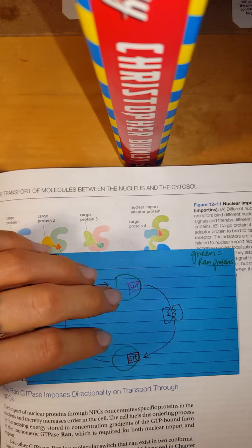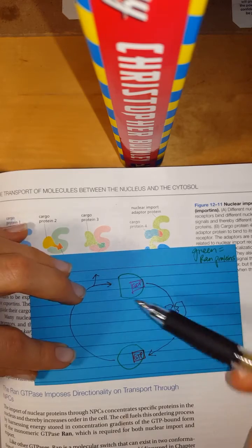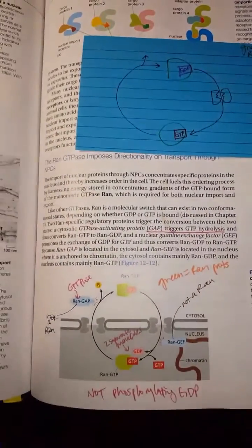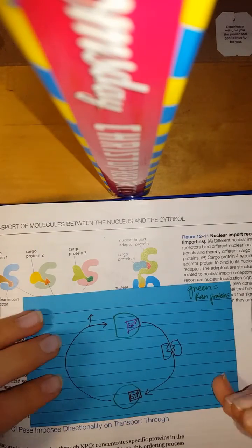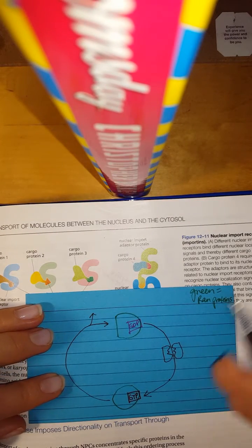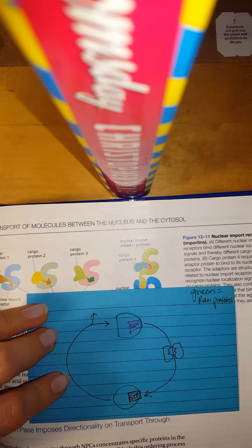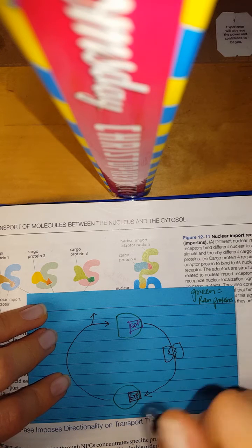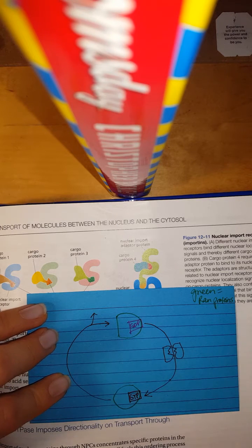I remember learning a lot when he was going over this in the review session. So basically I started drawing this cycle that's shown in my textbook. I'm drawing it again because it helps me learn when I draw the stuff or emphasize it by utilizing my hand. We have this is like a pore, right? And this is where the RAN GDP and RAN GTP are going to cycle in and out of the nucleus.